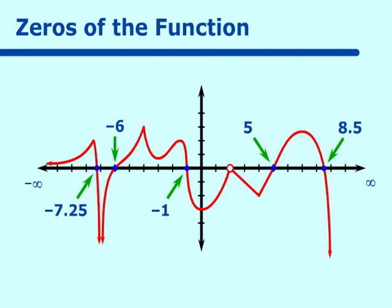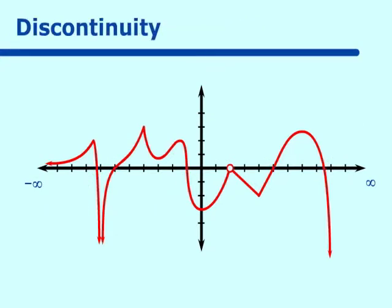What are the points of discontinuity? We have one point of discontinuity at x equals 2; the point is (2, 0). The other discontinuity is a vertical asymptote at x equals negative 7.